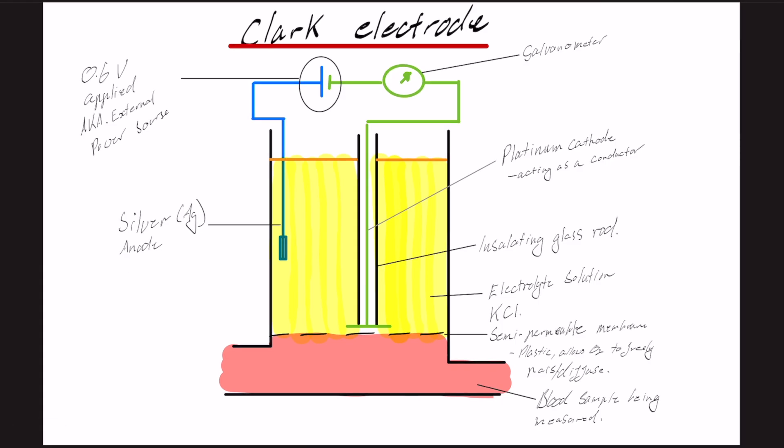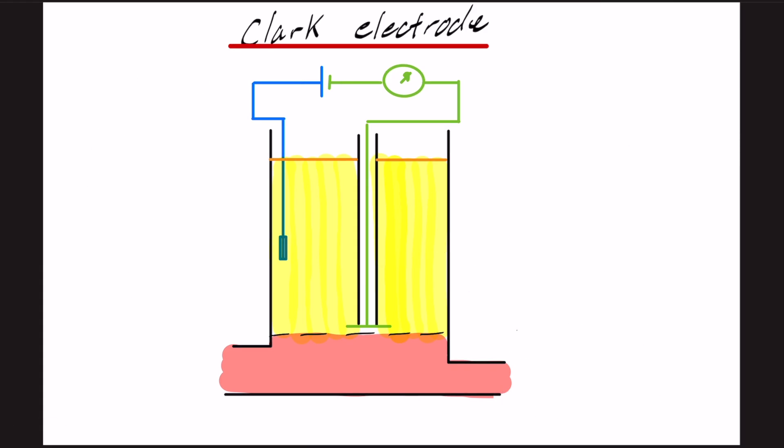So let's step through how it works. So our potential difference is applied to the circuit. It's about 0.6 volts. Blue, we've got our positive side, and green, we've got our negative side.